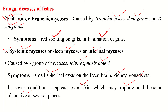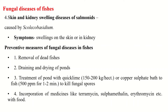The fourth type of disease is skin and kidney swelling disease of salmon. This disease is caused by Squalicobacidium. The symptoms include hard swelling on the skin or in the kidney.